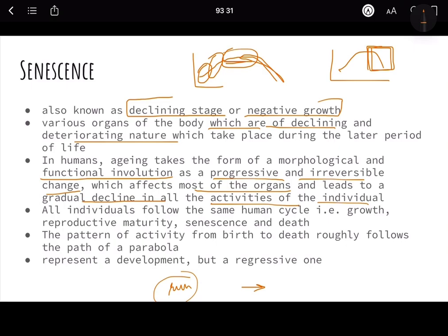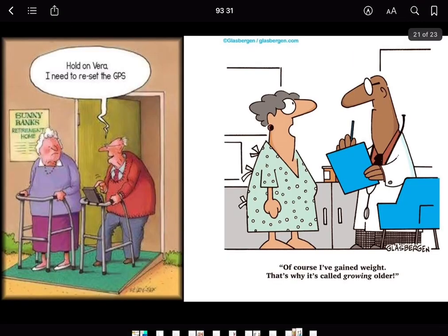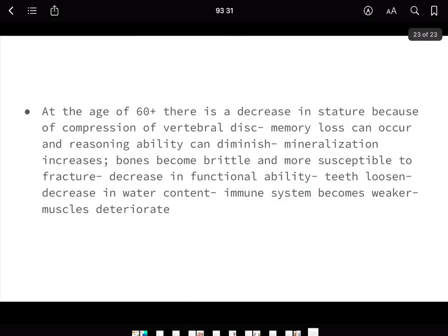This period of senescence now comes later because of advancement in medical sciences. You can say this is a period beyond 65 or 70 years. This is the time when you retire also, because it is believed that after this age your functional abilities to work reduce. All individuals follow the same human cycle: growth, reproductive maturity, senescence, and then death. This is what every human has to go through and nobody is immortal. The pattern of activities from birth to death roughly follows the path of a parabola. This is how aging looks. Everybody should remember that nobody is beyond that and everybody has to face this.